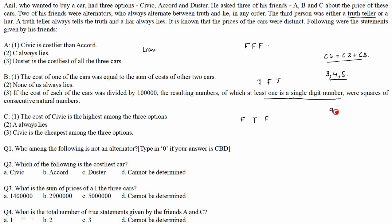So the consecutive natural numbers are 3, 4, 5, giving squares 9, 16, and 25. At least one is a single-digit number — 9 qualifies. Therefore A is a liar (F-F-F), B is an alternator (T-F-T), and C is an alternator (F-T-F). This case is getting satisfied.